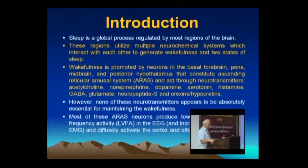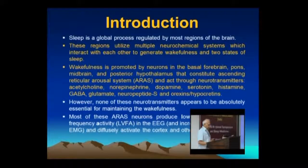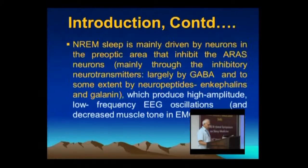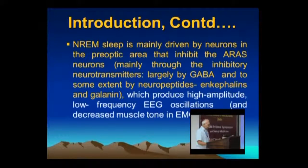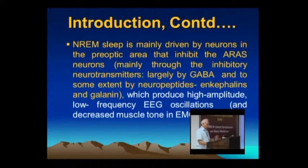Most of these ARAS neurons produce low voltage, fast frequency activity, as told by Dr. Mohandakumar in the EEG, and increase muscle tone in the AMG, and diffusely activate the cortex and other forebrain regions. NREM sleep is mainly driven by the neurons in the pre-optic area, with various neurotransmitters — the most important being GABA, and to some extent other neuropeptides like enkephalins and galanin. All three are inhibitory neuropeptides.